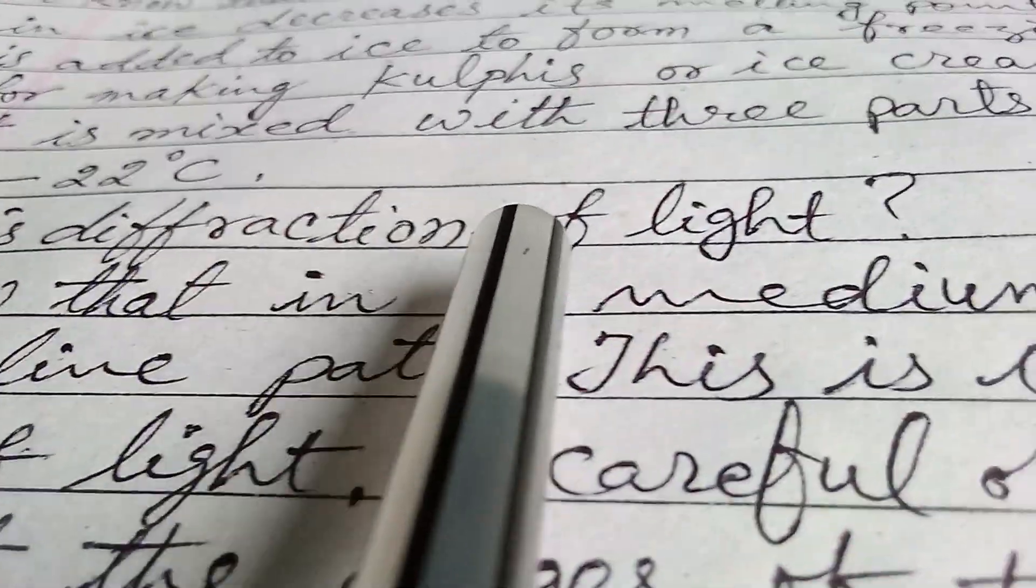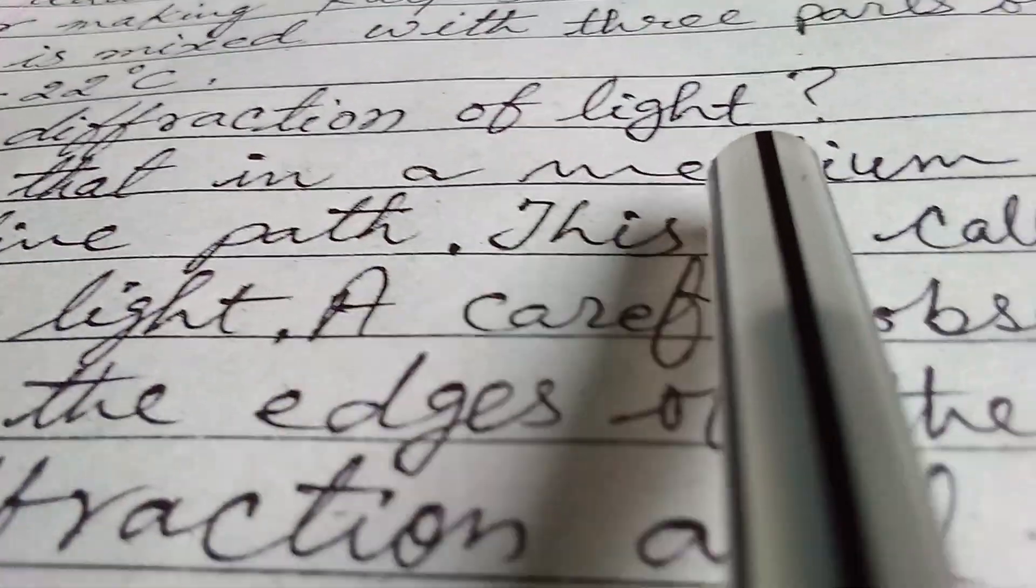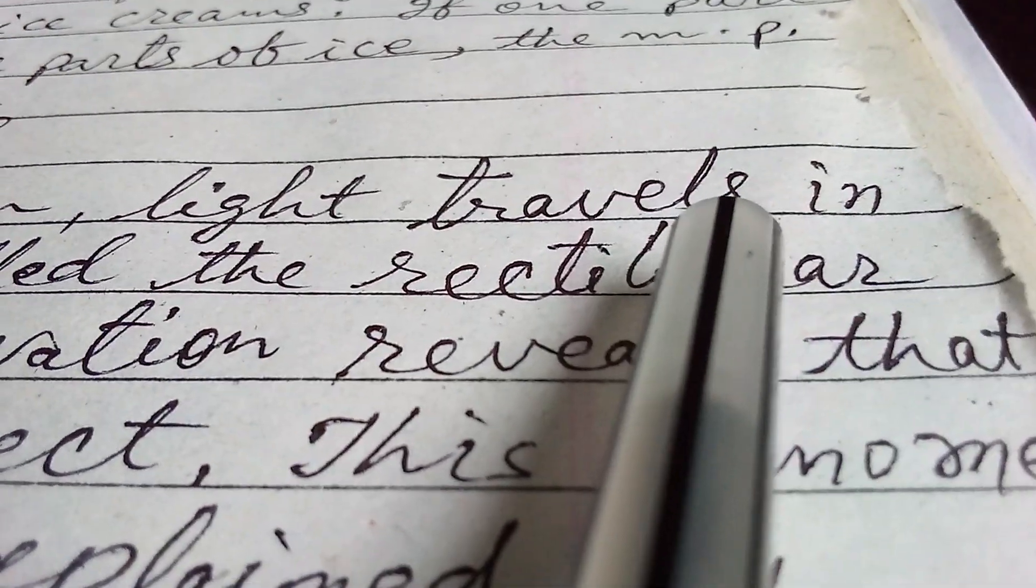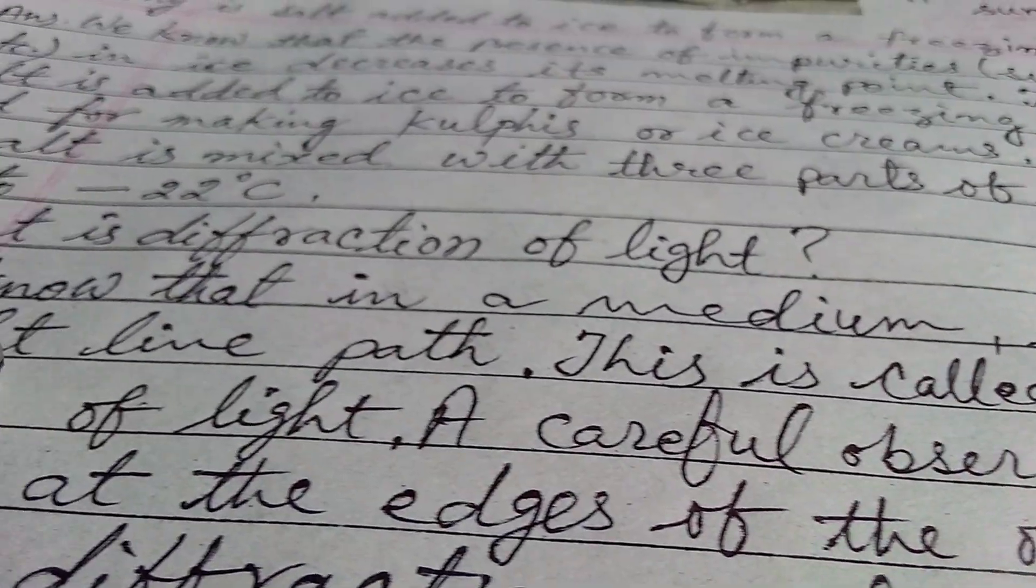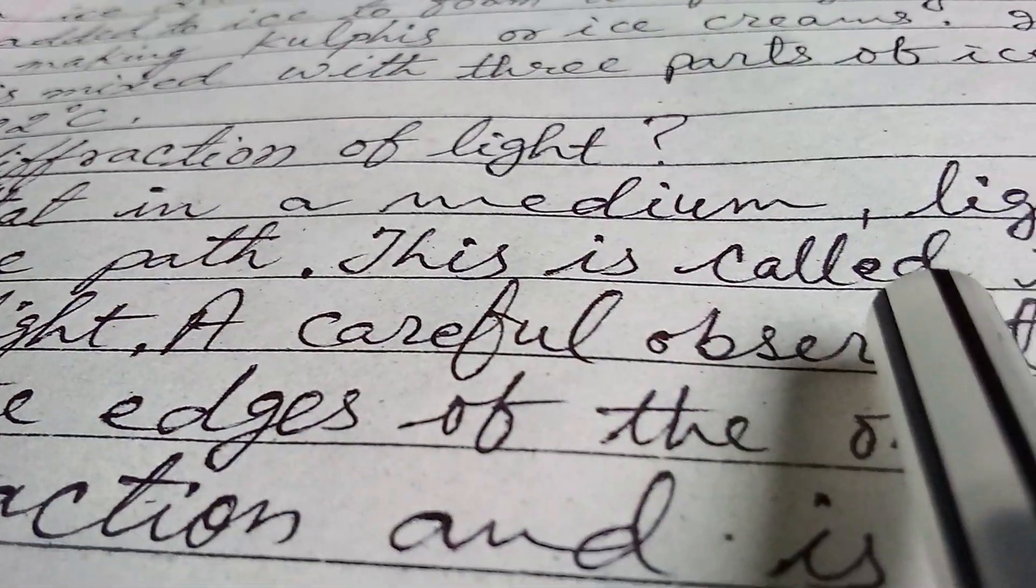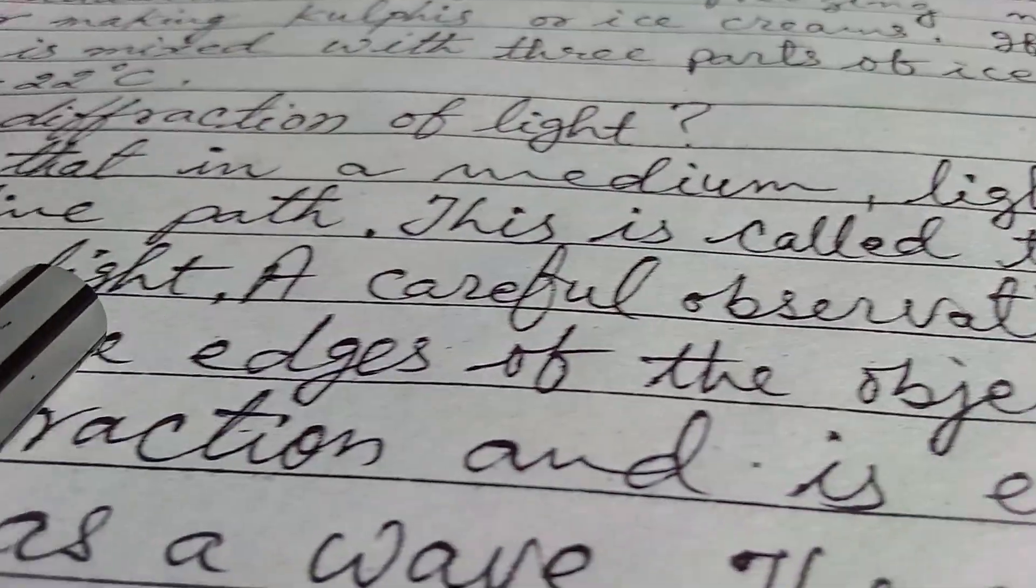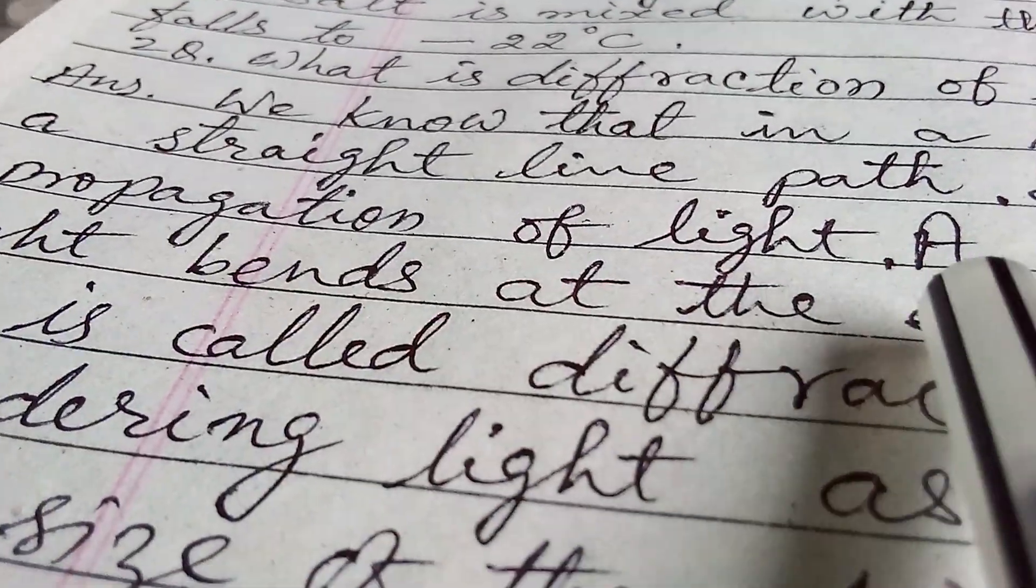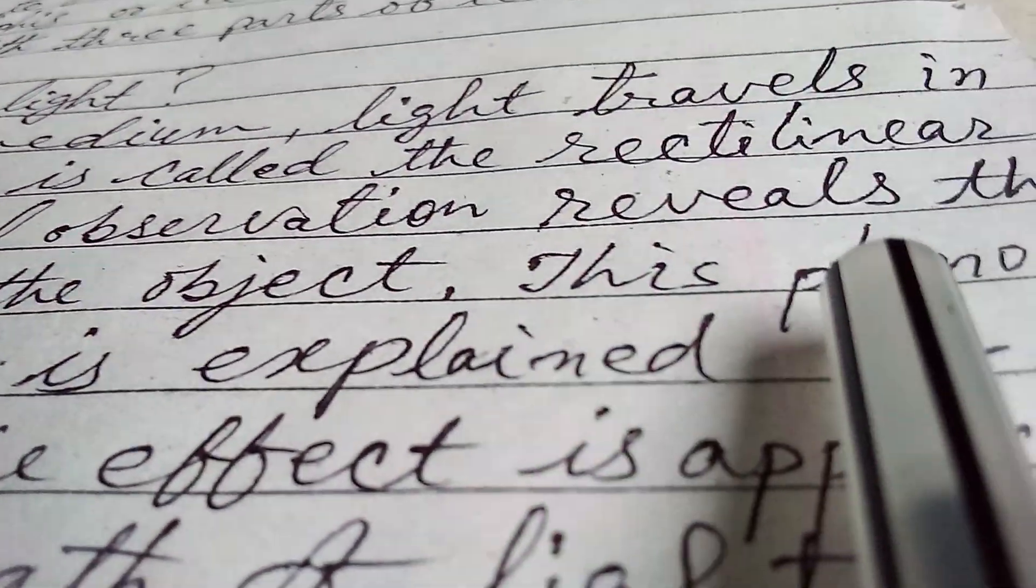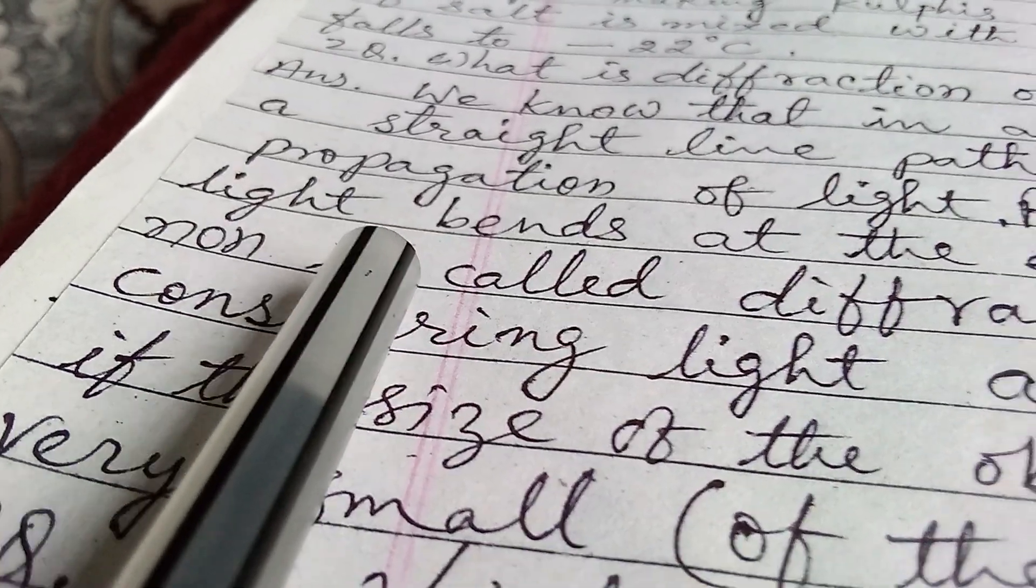Second question: what is diffraction of light? Answer: we know that in a medium, light travels in a straight line path. This is called the rectilinear propagation of light. Upon careful observation, light bends at the edges of the object.